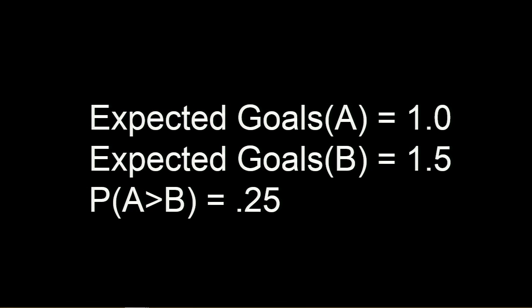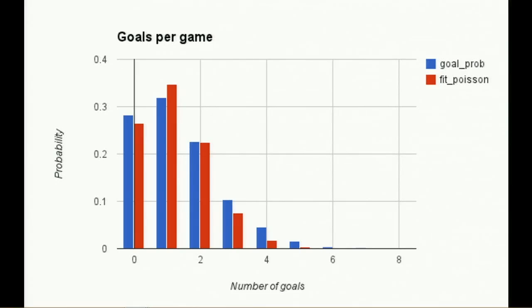A side effect of this is that the best team doesn't always win. So if we have a team with 1.0 expected goals and another with 1.5 expected goals, the first team will win almost a quarter of the time. Here's how closely the data fits to the Poisson distribution — and if you look at more data, other analyses show the fit is even closer.